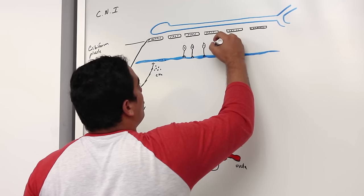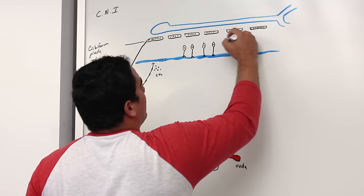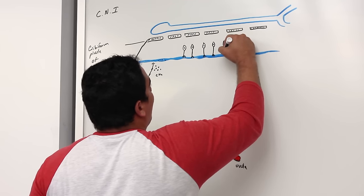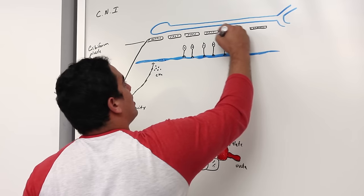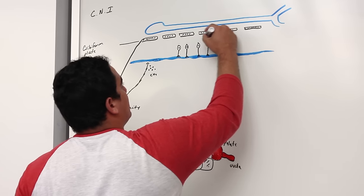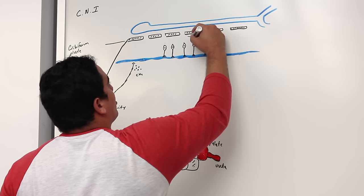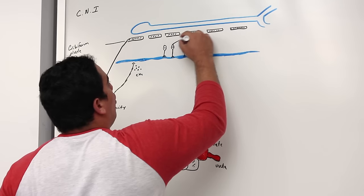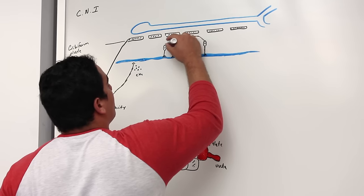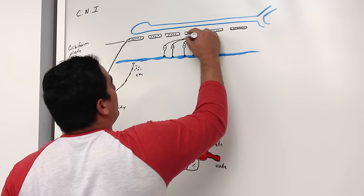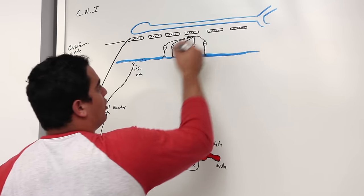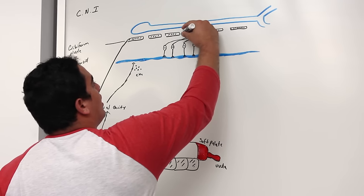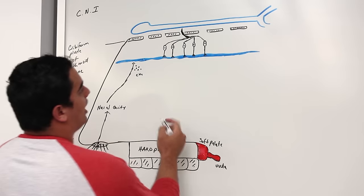These olfactory neurons have axons that are important because most of the axons are going to come together — a whole bunch of them, about 20 of them. I want you to understand that this nerve is running through the cribriform plate of the ethmoid bone.